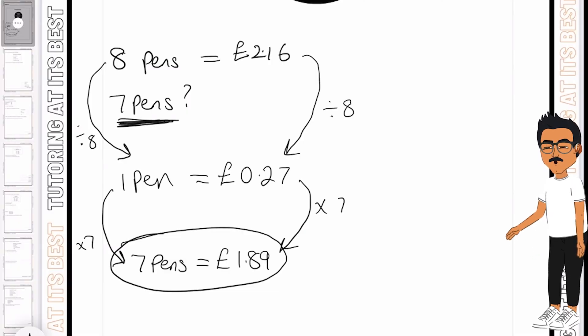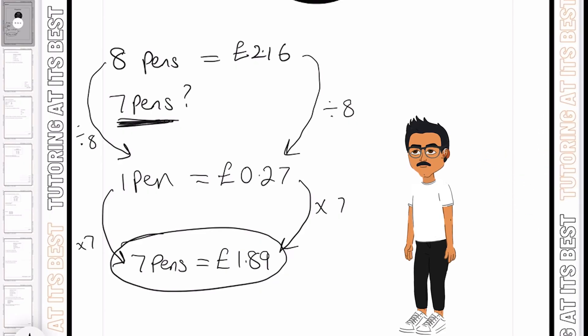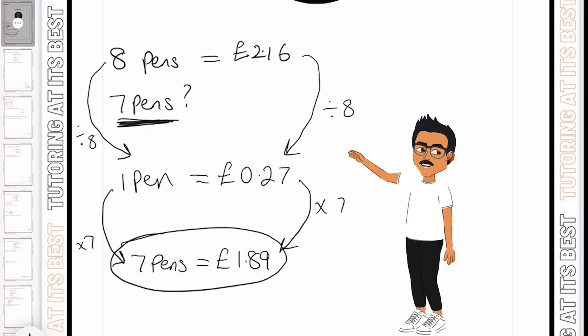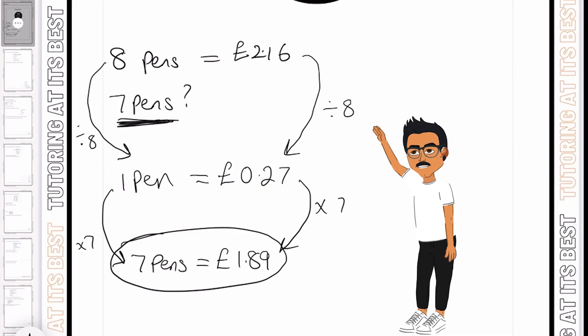Now if you haven't seen our Best Buys video, please go ahead and watch that, because proportion calculations can be used to decide which items in a shop offer the best value. Many items sold in supermarkets have a price and a price per 100 grams or per kg, so this lets people compare products and get the best value for money.